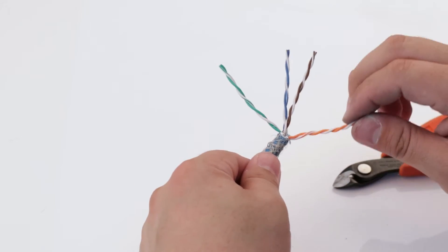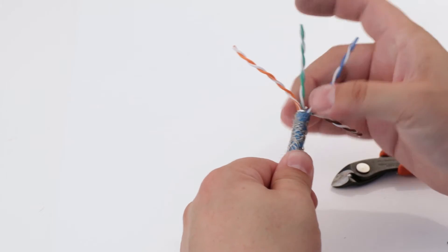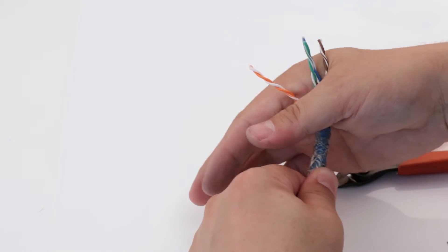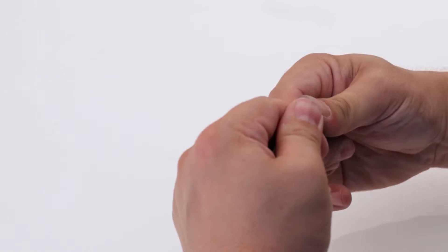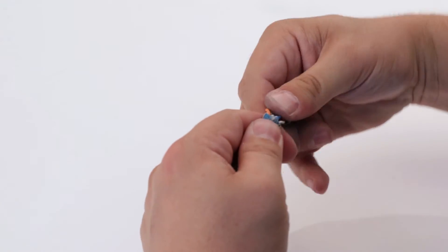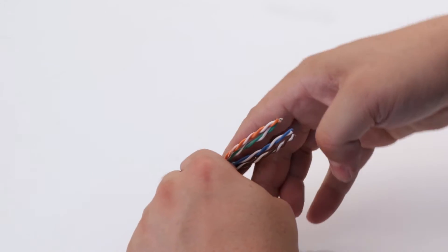Straighten and arrange the four twisted pairs according to the T568B color scheme. Bend the four twisted pairs 90 degrees. Using your fingers, flatten out the cable jacket into an oval shape. Doing so will allow the clip to close properly.